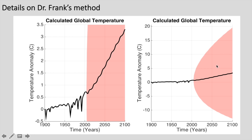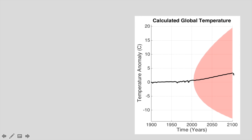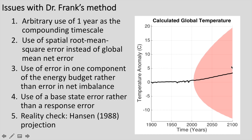It's totally implausible that temperature could decrease by 15 degrees while we're increasing CO2, or increase by 20 degrees Celsius under RCP 8.5. As I understand it, this is Dr. Frank's point: when you properly account for uncertainty in climate model projections, it becomes so large so quickly that you can't draw any meaning from the projections. Hopefully I've summarized Dr. Frank's method accurately, and if so, I'd like to raise a number of issues with this method.